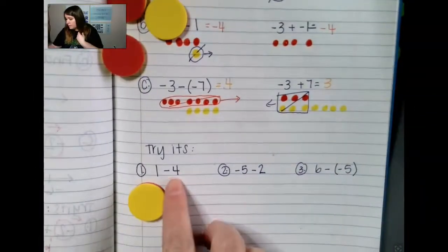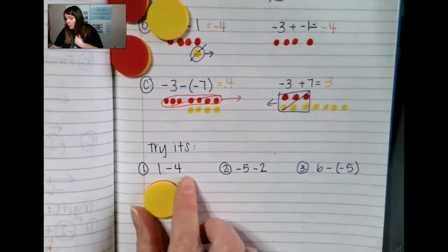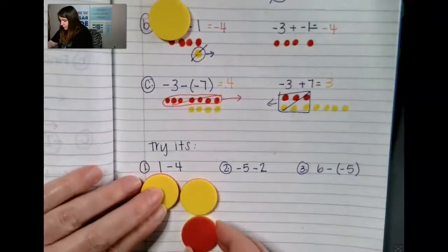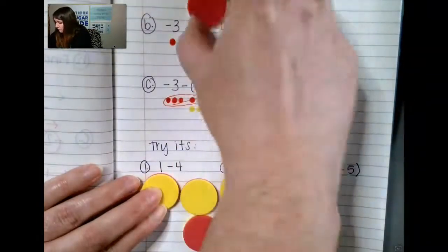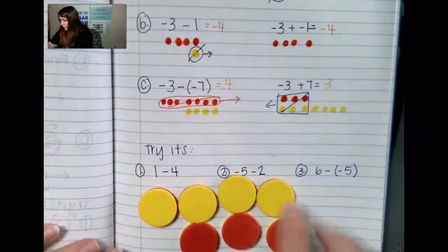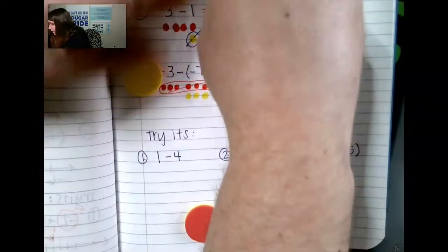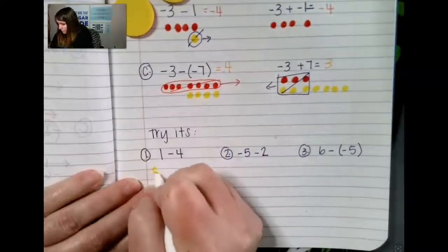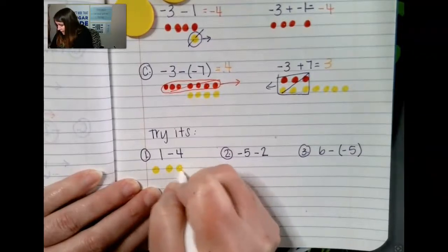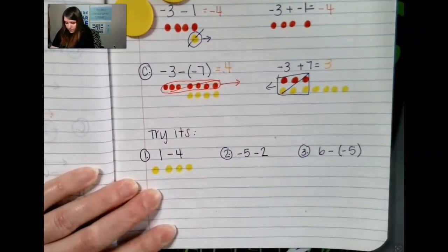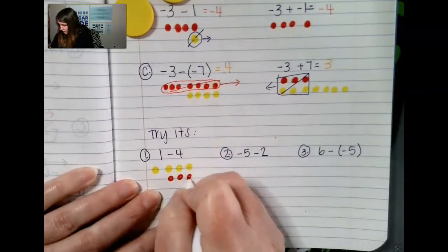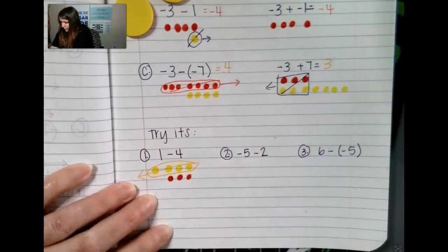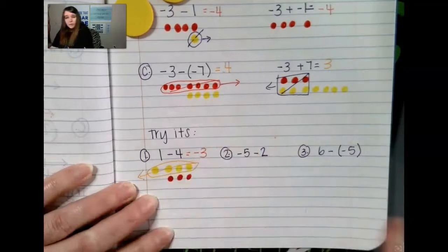I had 1 positive and I'm going to subtract 4 positives. Well, I don't have 4 positives to subtract, so I have to create the possibility by making 0 pairs until I get 4 positives that I can take away. I can take away my 4 positives now, and I'm left with 3 negatives. So I had 1 positive, and then I needed to create the possibility by adding on 0 pairs so that I could take away 4 positives — and I'm left with negative 3.